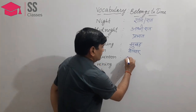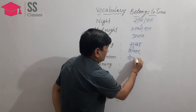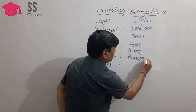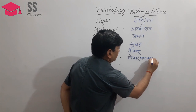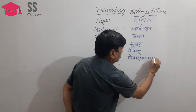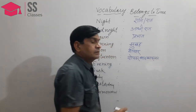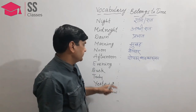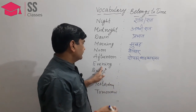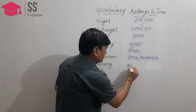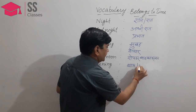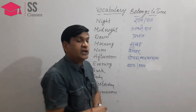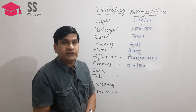Afternoon — dho pahar baad ka samay, which in Hindi we also say madhyaan ka samay. Evening — shyam, or we can also say saayin. It is the time of evening — shyam ka samay.